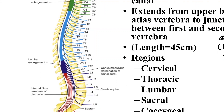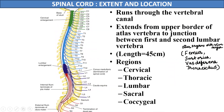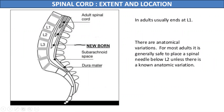The filum terminale of pia mater continues up to the coccygeal vertebra. So the extent of the spinal cord is from the upper border of the first cervical vertebra to the lower border of L1, and beyond that it continues as the filum terminale. Though the lower end of the spinal cord lies at L1 in adults, in newborns it is present at the level of L3. This knowledge is important especially when doing procedures like lumbar puncture, where we must be careful in newborns as the spinal cord lies at a lower level.